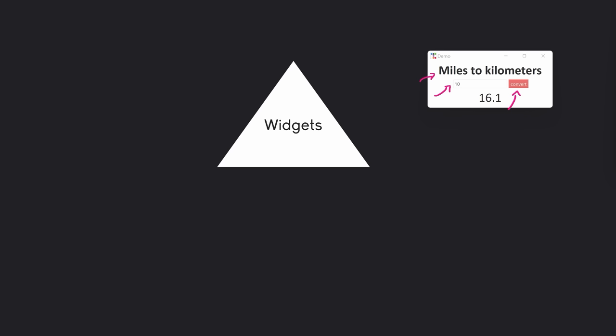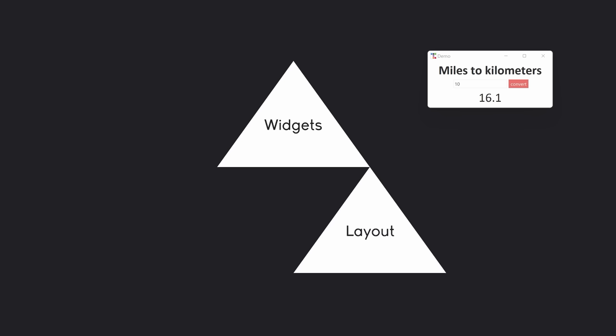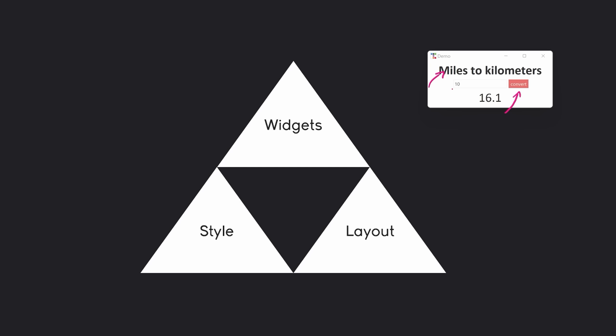Besides widgets, we have layout. This determines how the widgets are arranged on the window. For example, in the app you can see here, we have a top-down arrangement with three different rows, and inside of the middle one, we have two different columns — one for the entry field and one for the button. Finally, we have style, which determines the color of the button, the font of the text, the size, and so on. We could also set the background color and lots of other things.